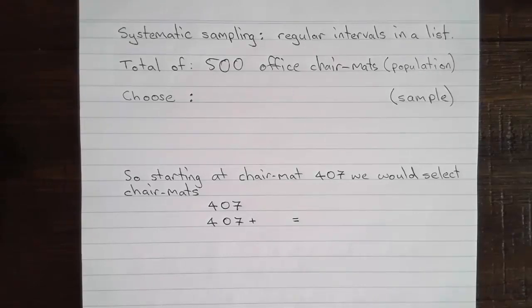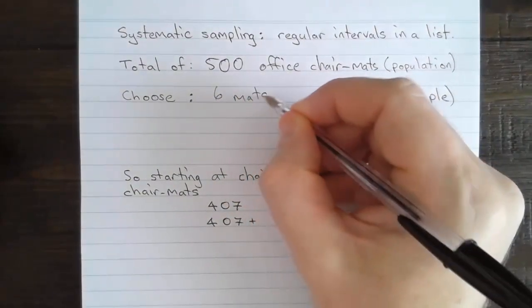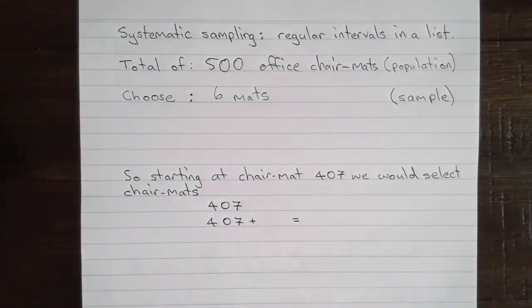To figure out what that interval is, we need to know how many we're going to choose. We're told in the question that we're going to choose 6 of the mats. So we need to figure out what the interval is, so that we'll select 6 mats from 500 at a regular interval.